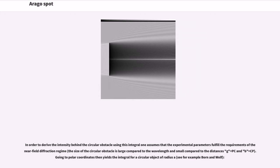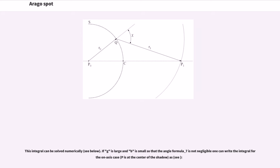In order to derive the intensity behind the circular obstacle using this integral, one assumes that the experimental parameters fulfill the requirements of the near field diffraction regime. Going to polar coordinates then yields the integral for a circular object of radius a. This integral can be solved numerically. If G is large and B is small so that the angle is not negligible, one can write the integral for the on-axis case.